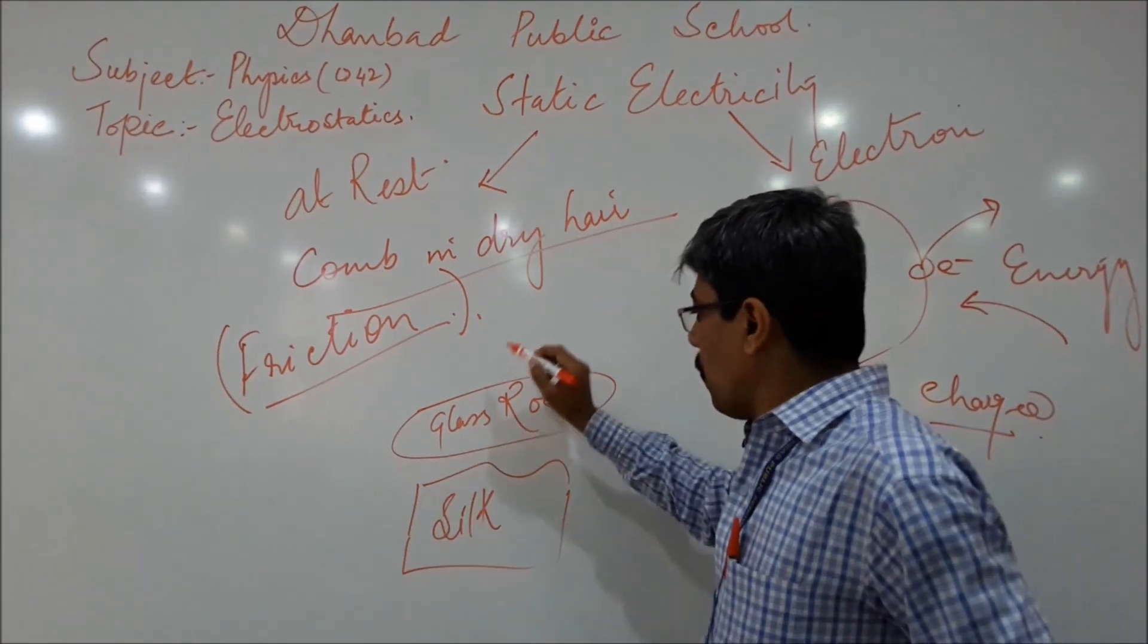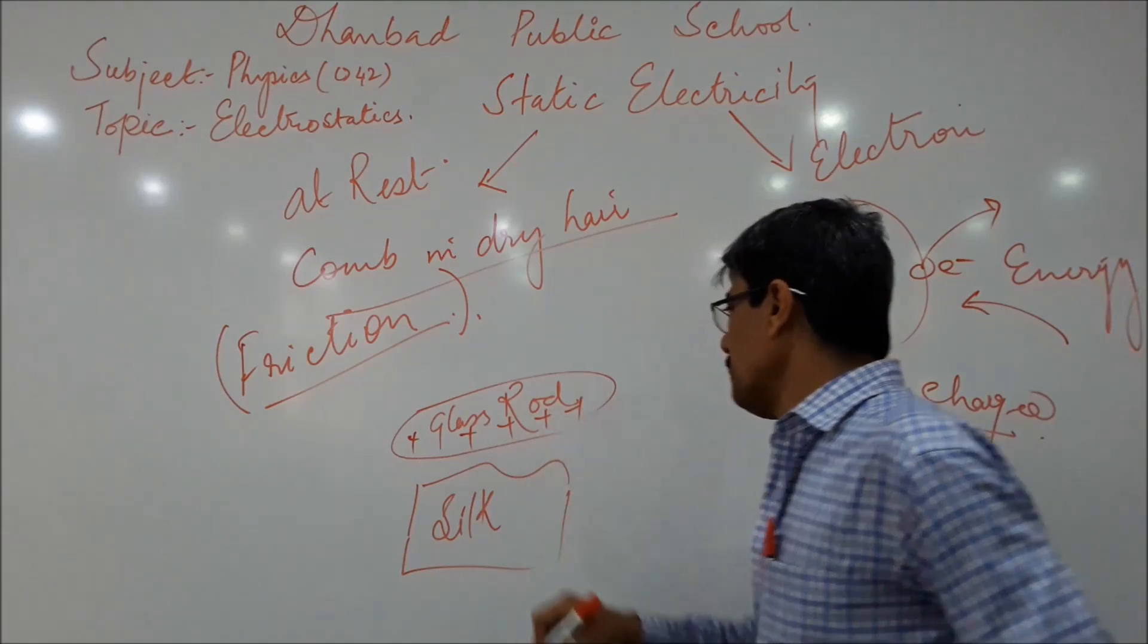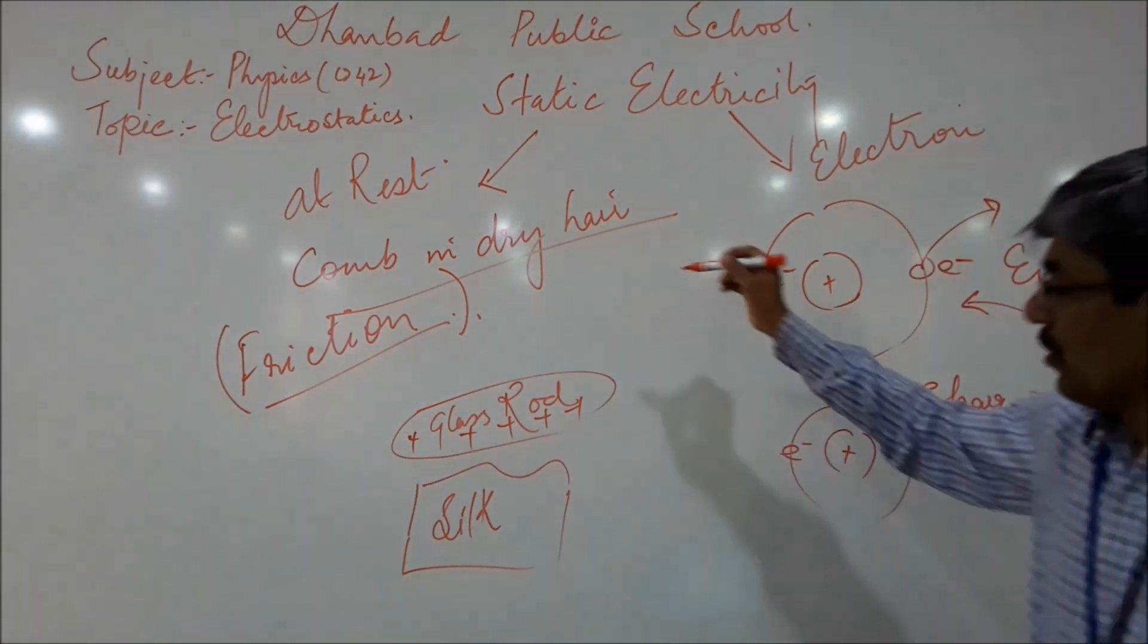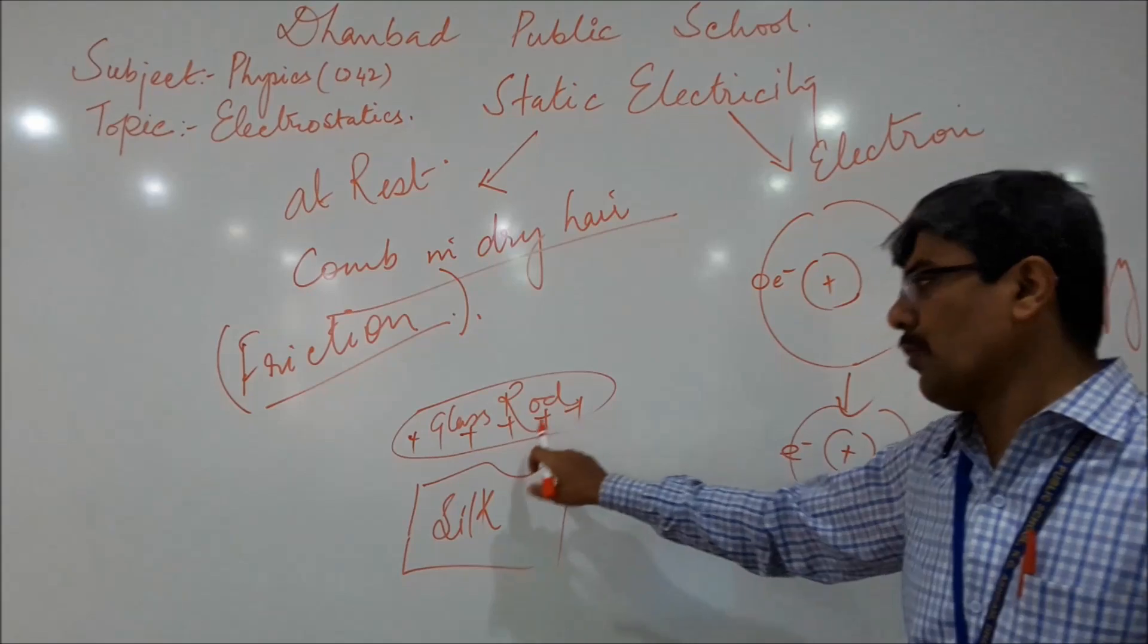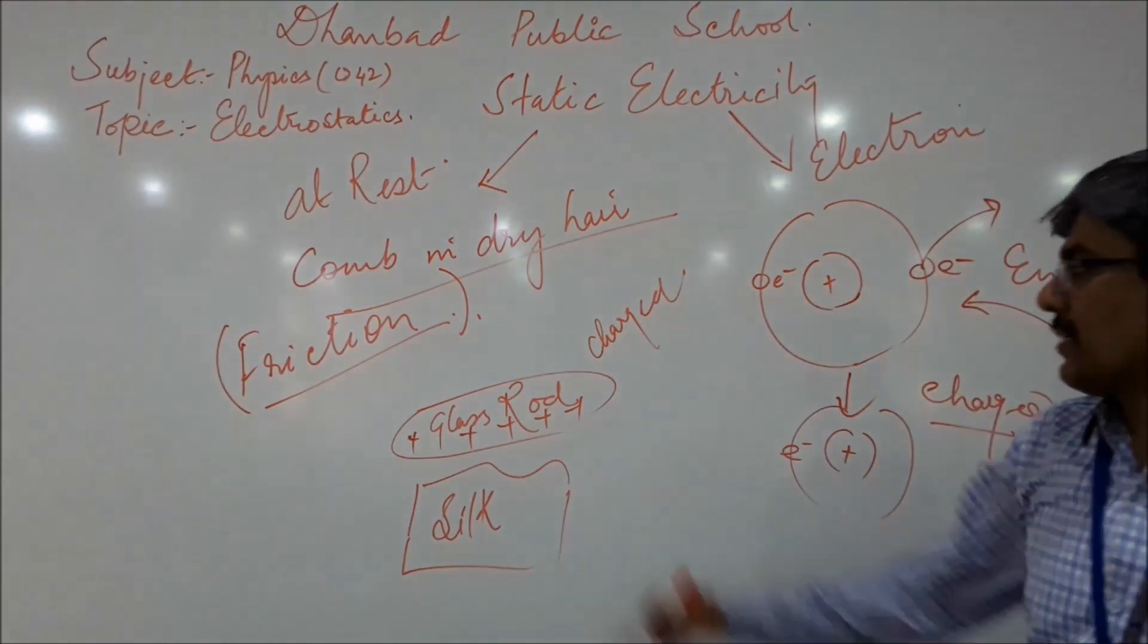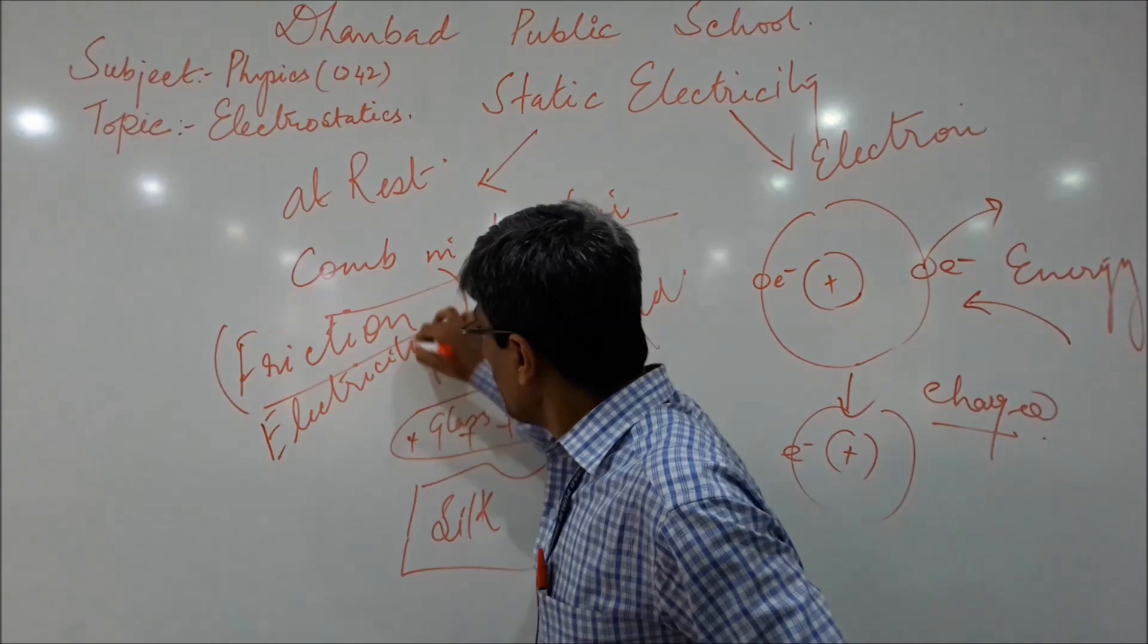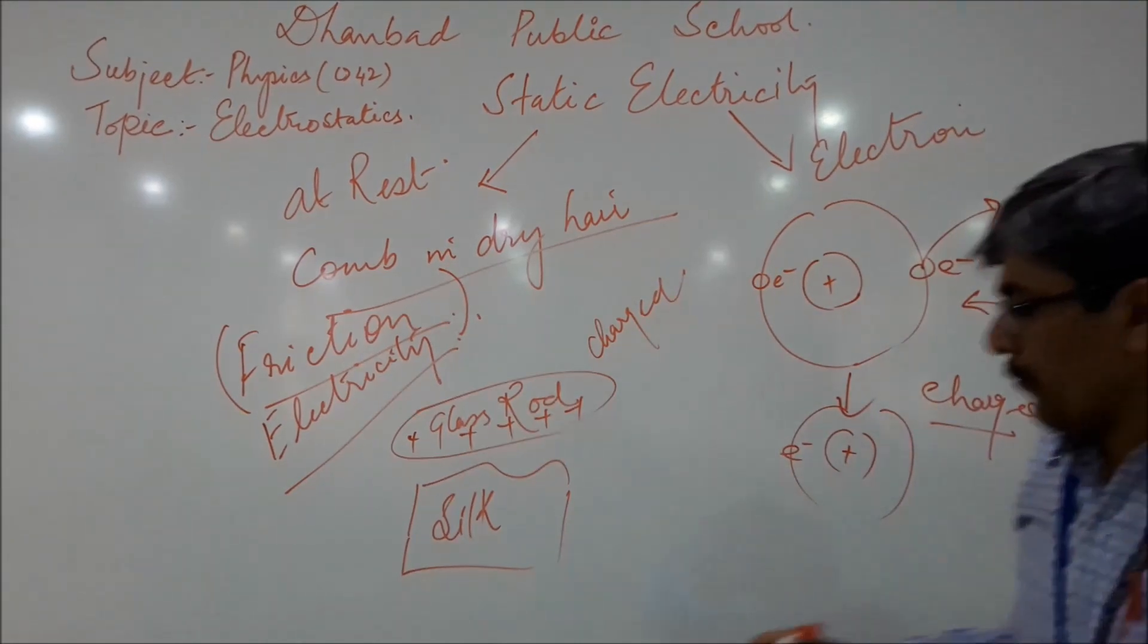In actual practice, when you rub glass rod with silk, some electrons are removed from the glass rod. The heat developed in rubbing, work done against friction is enough to remove electrons from the glass rod. Thus, the glass rod becomes charged. That is why this topic is also commonly called as frictional electricity. There is no other way you can remove electrons without inputting any energy.